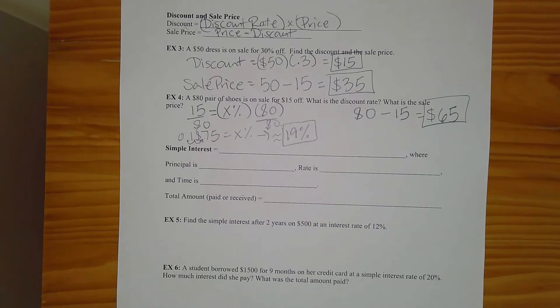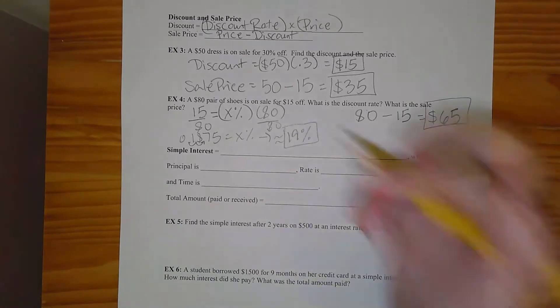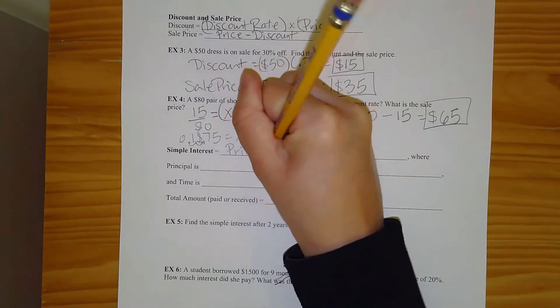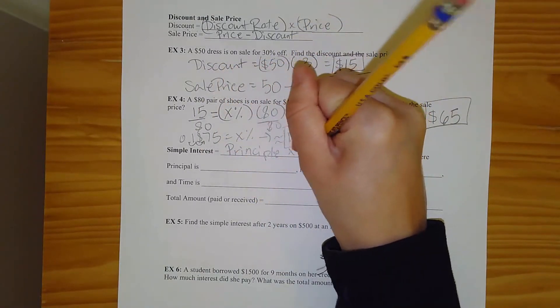In this part, we're just going to finish up and look at simple interest. So simple interest, the equation looks like this. Simple interest equals principal times rate times time.